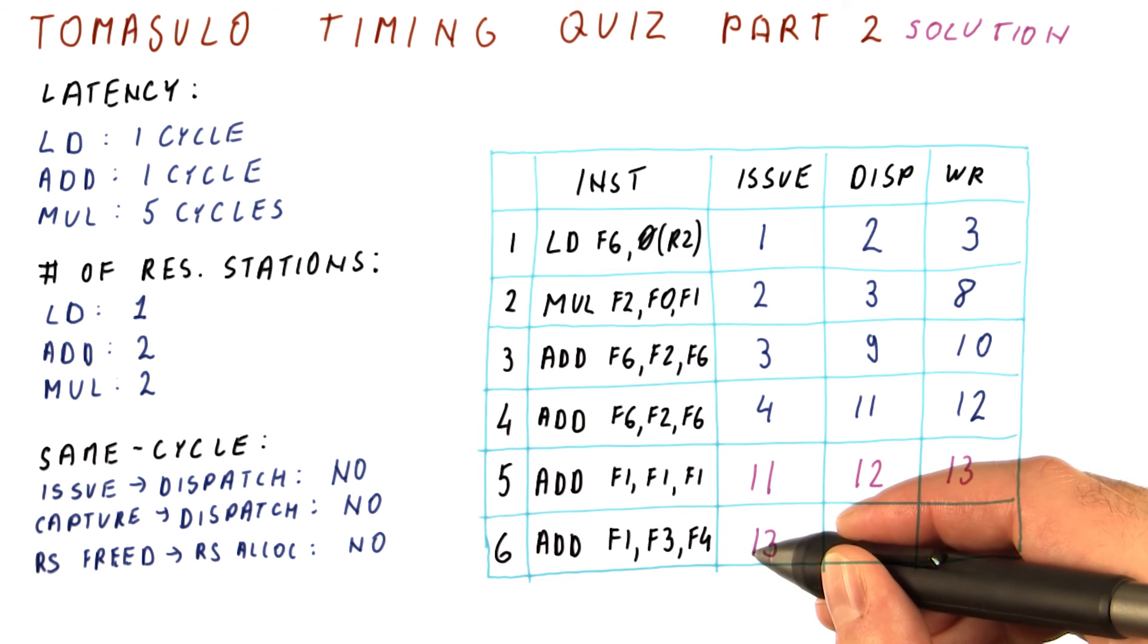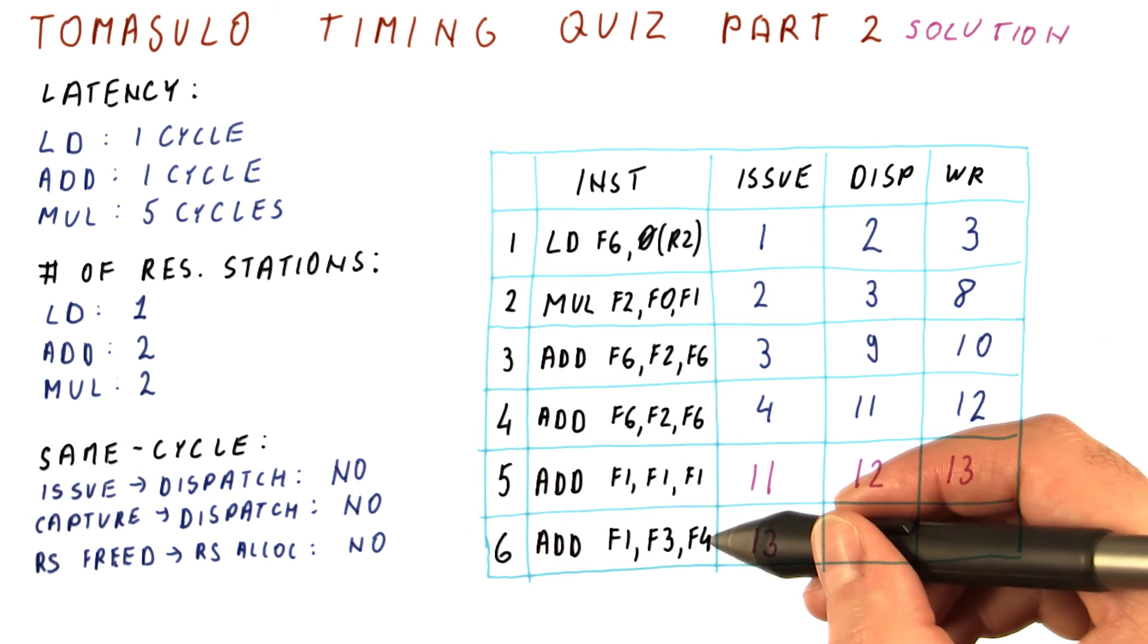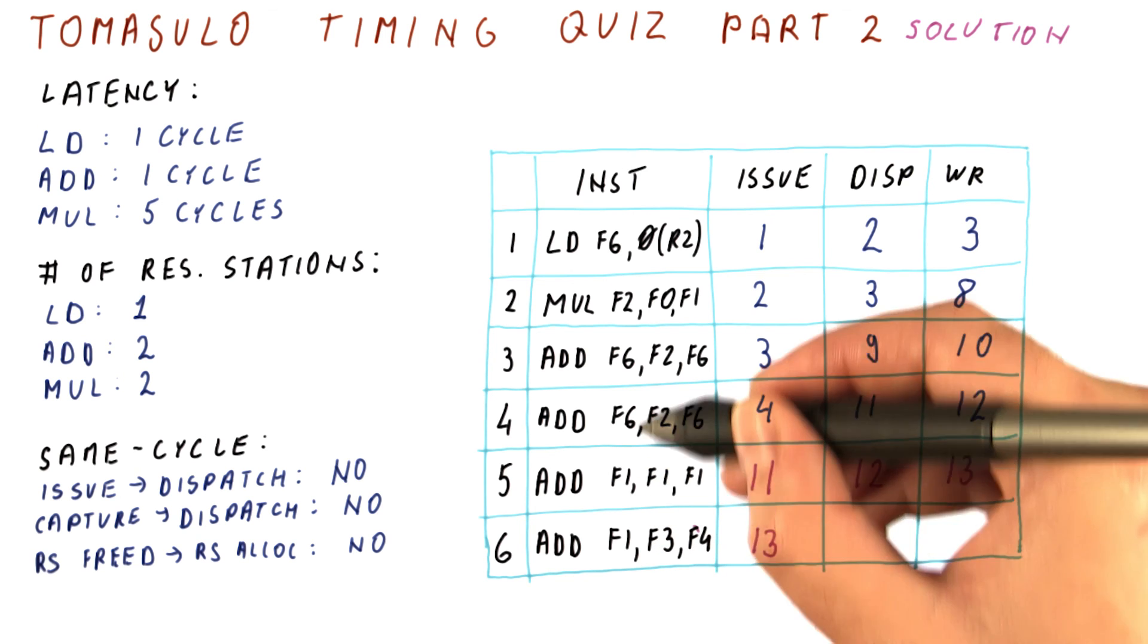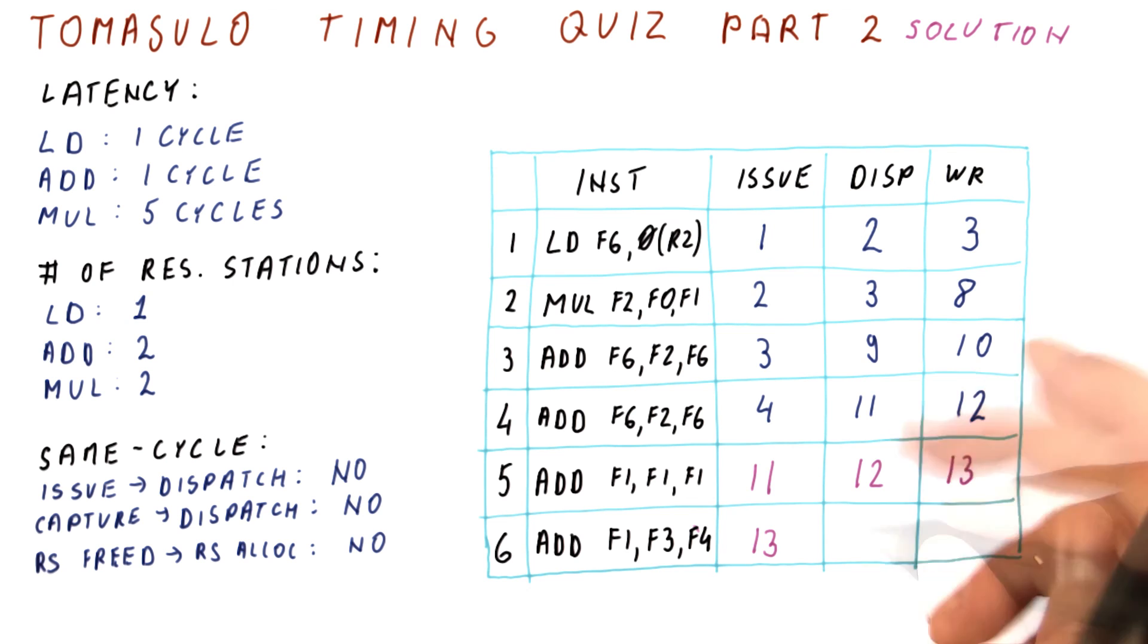So this ADD here actually issues in cycle 13. And then it doesn't wait for anything because F3 and F4 are not produced by previous instructions. So it will dispatch in cycle 14 and finally write its result in cycle 15.